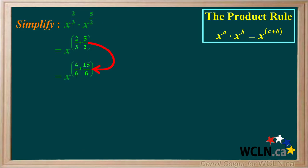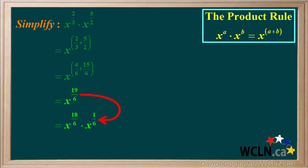To do this, we convert the fractions to a common denominator of 6. So we get 4 sixths plus 15 sixths. 4 sixths plus 15 sixths equals 19 sixths, so we have x to the power of 19 over 6. When an exponent is an improper fraction, we can also choose to factor it. x to the power of 19 over 6 can be factored to x to the 18 over 6 times x to the 1 over 6. x to the power of 18 over 6 is the same as x cubed, so the answer can also be written as x cubed times x to the 1 sixth.